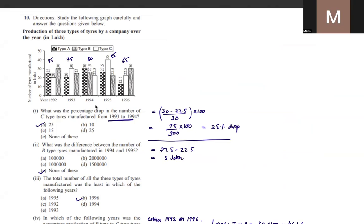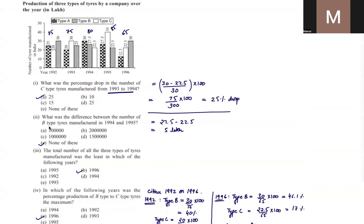In this case, the data is related to production of three types of tires for a company over the years, and the figures are in lakhs. The first question asks: what was the percentage drop in C-type tires manufactured from 1993 to 1994? C-type is the empty bar in the graph. The drop is 30 minus 22.5, divided by 30, giving a 25% drop. So option A is the answer.